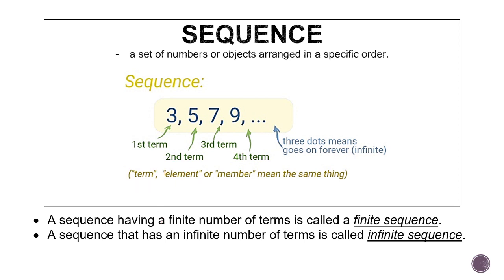A sequence having a finite number of terms is called a finite sequence, and a sequence that has an infinite number of terms is called infinite sequence. The difference: if it's finite, there is an end, a limited number of terms. If it's infinite sequence, there's no end, it goes on forever. And to denote infinity, we use three dots. These three dots denote that the sequence will go on forever.